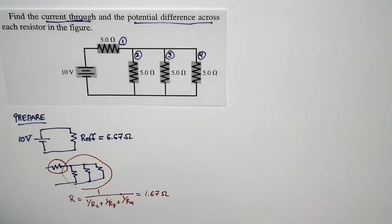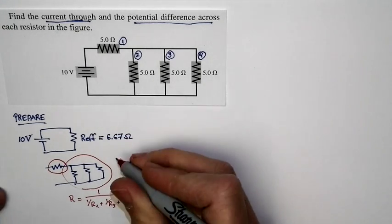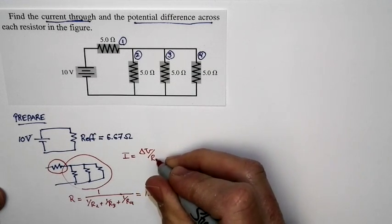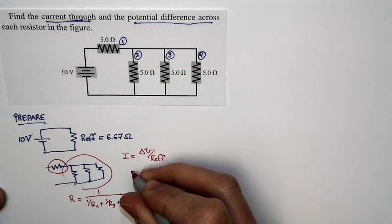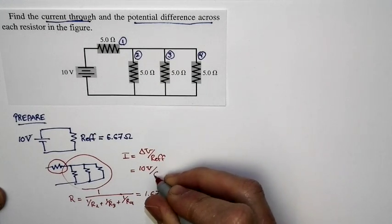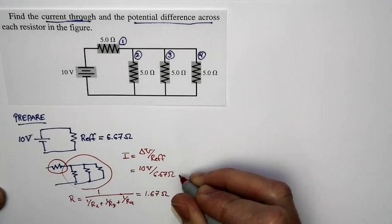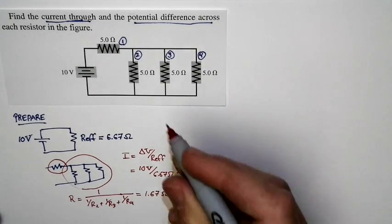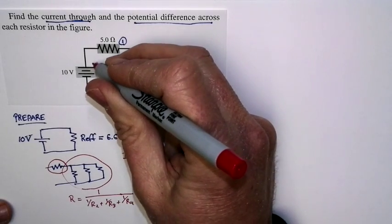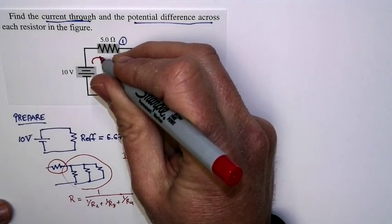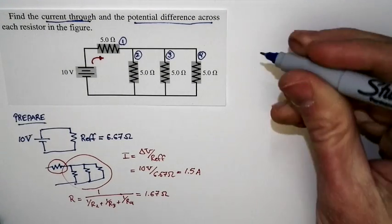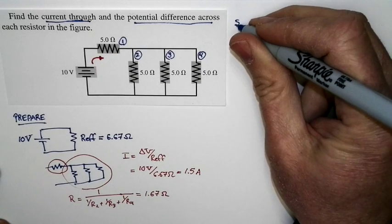That's the effective resistance for the whole circuit. If we know that, we can compute the current in the circuit. The current is just equal to delta V divided by the effective resistance. Delta V is 10 volts, the effective resistance is 6.67 ohms, so we end up with a current of 1.5 amps. All that current comes out of the power supply and goes through this resistor.